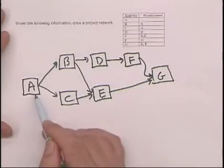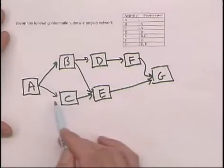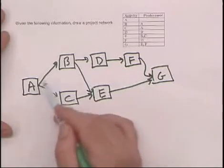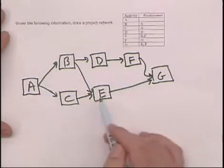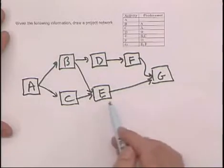A is a burst activity, which means more than one activity can start as soon as it's done, indicated by that arrow. And then E and G are both merge activities.